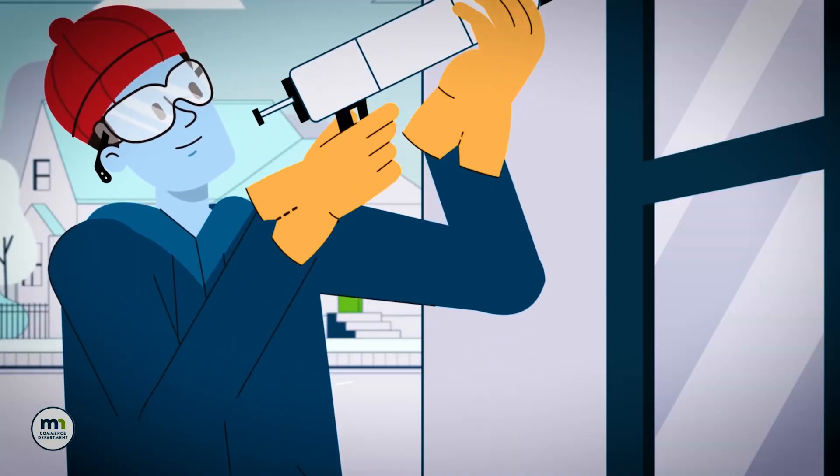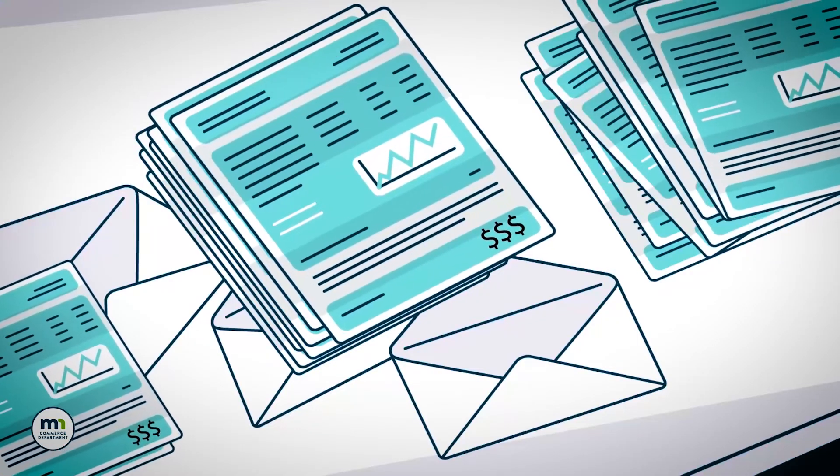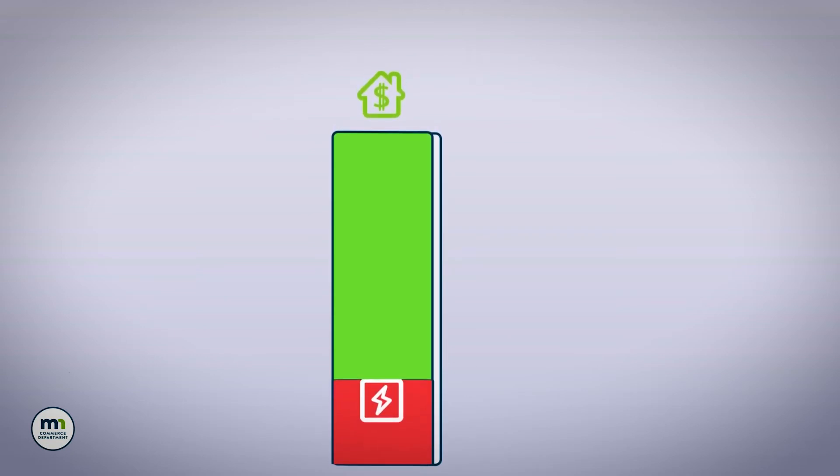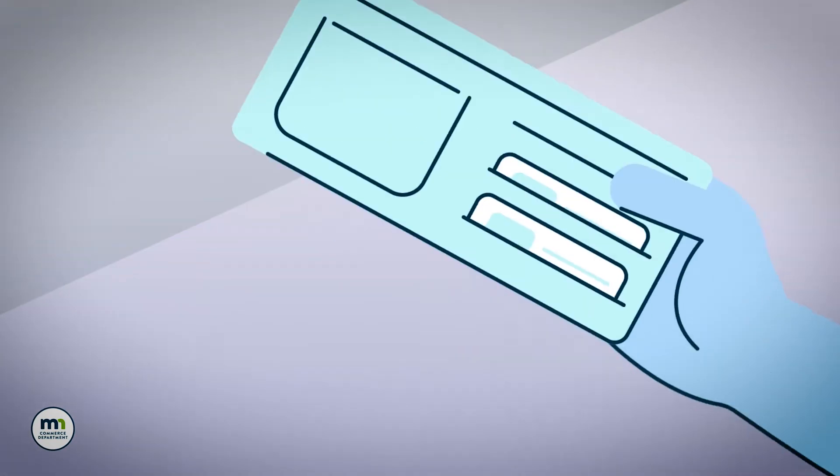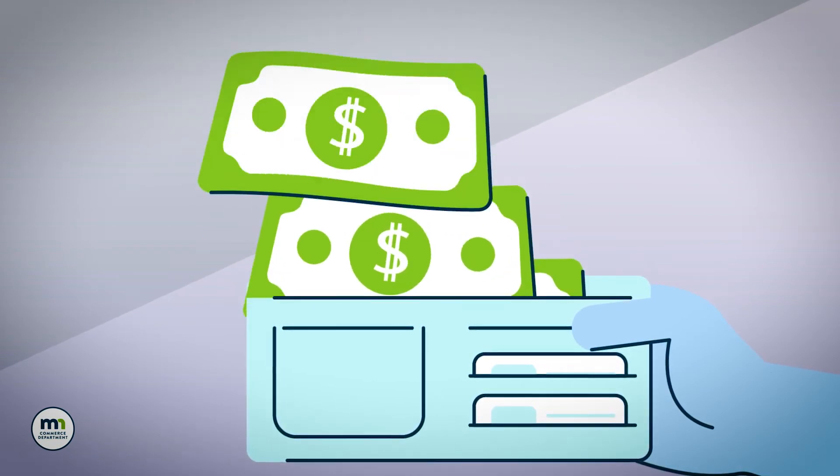And speaking of costs, when you weatherize your home, you reduce your energy bills and lower your energy burden. Many families with lower household incomes often carry a larger burden of energy costs than they need to. This means that those households typically spend a higher percentage of their income on energy than other families do. Reducing your family's energy burden means you'll have more money for other things.